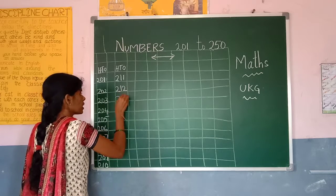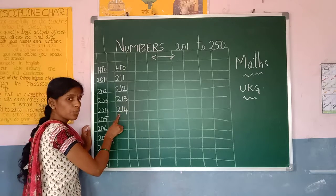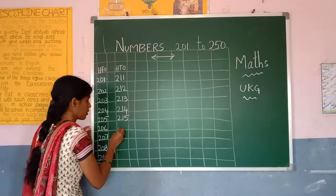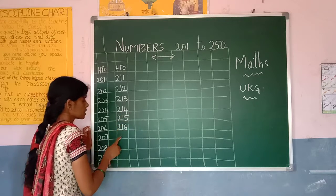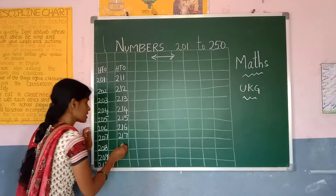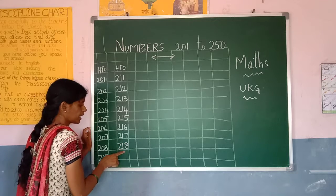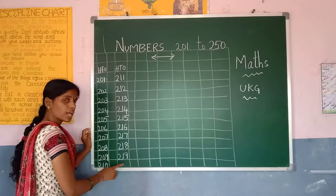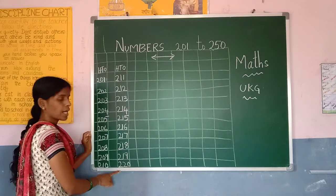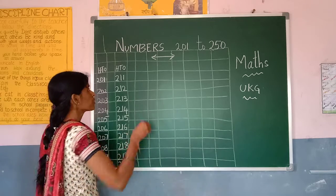2-1-3, 213. 2-1-4, 214. 2-1-6, 216. 2-1-7, 217. 2-1-8, 218. 2-1-9, 219. 2-2-0, 220. After 20 comes 21.